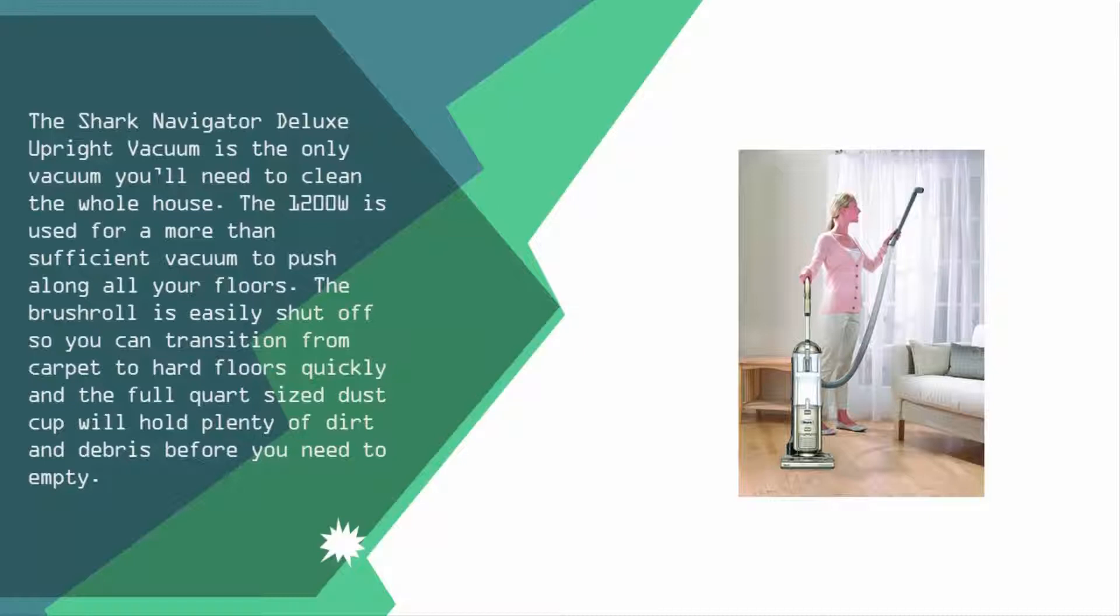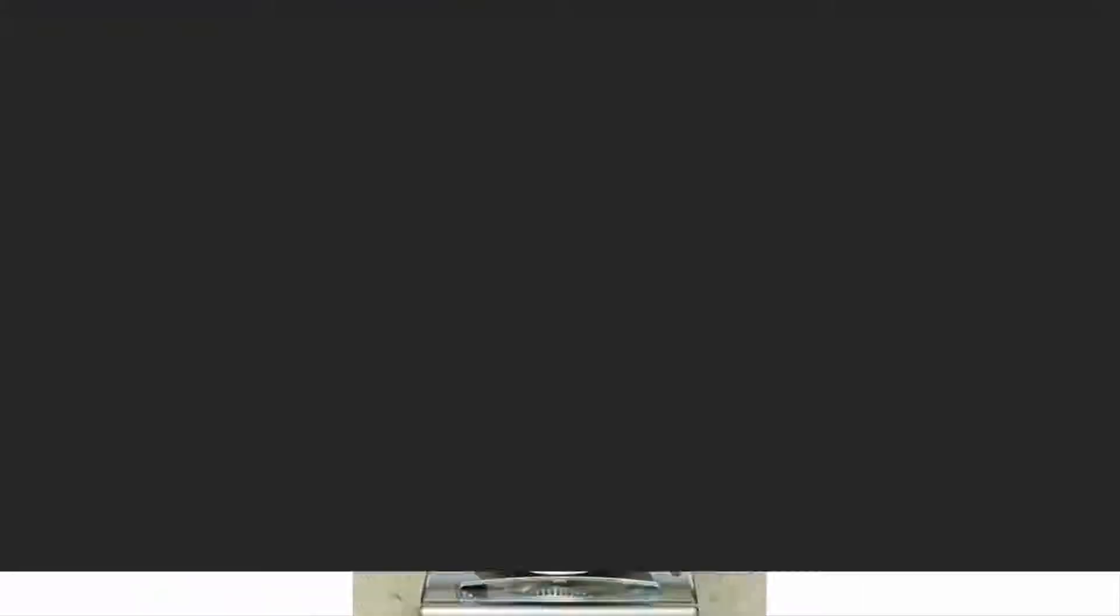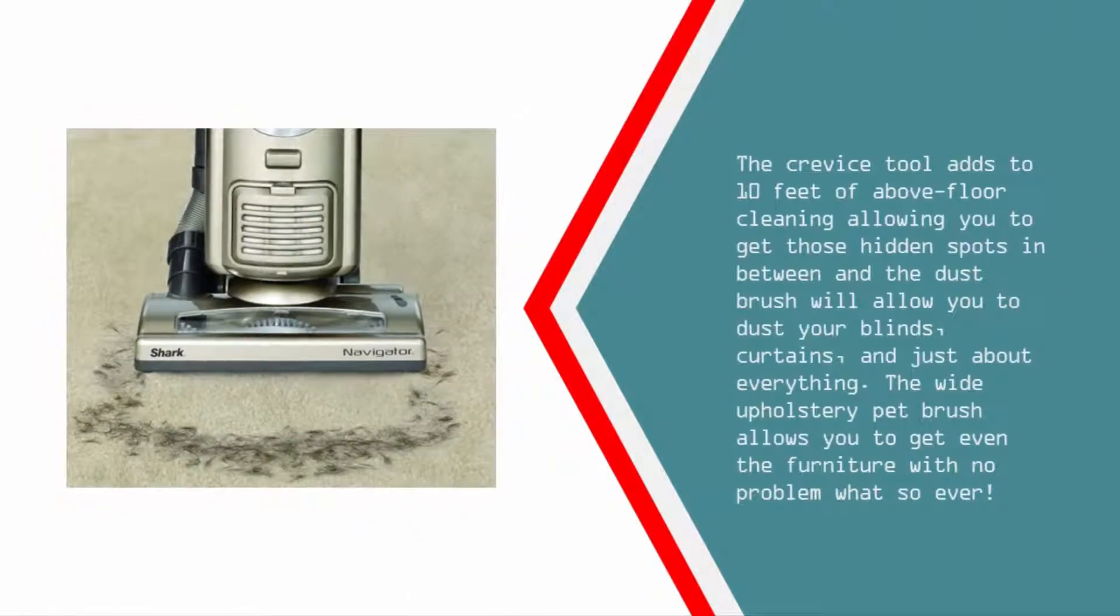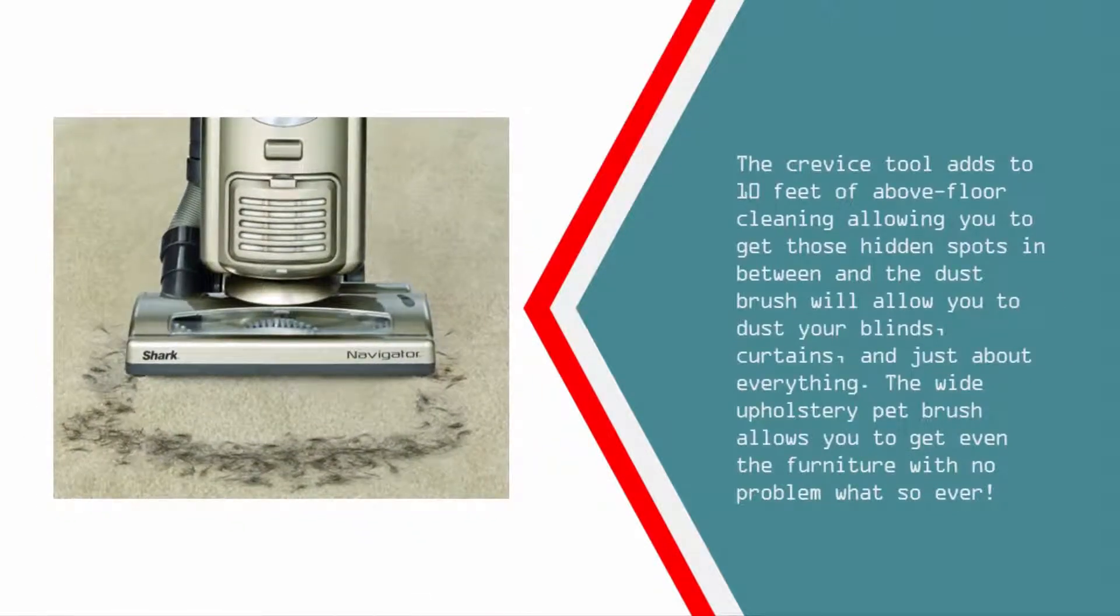The crevice tool adds up to 10 feet of above floor cleaning, allowing you to get those hidden spots in between. The dust brush will allow you to dust your blinds, curtains, and just about everything. The wide upholstery pet brush allows you to get even the furniture with no problem whatsoever.